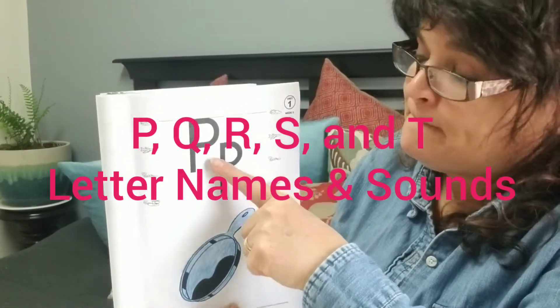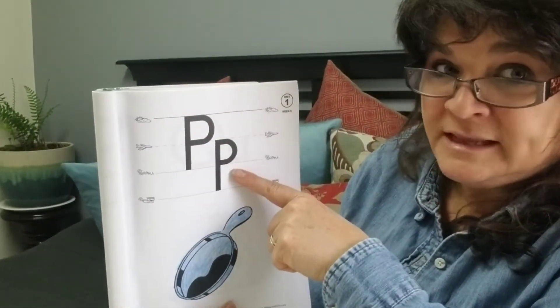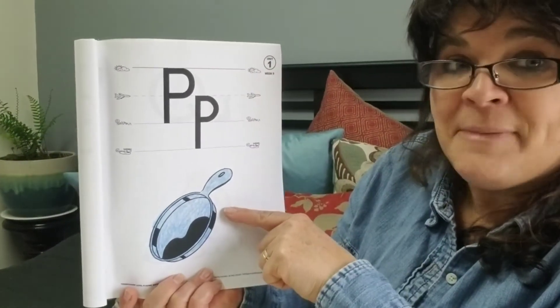This is the letter P. Big P. Little P. P begins words like pan.